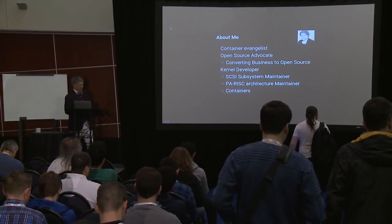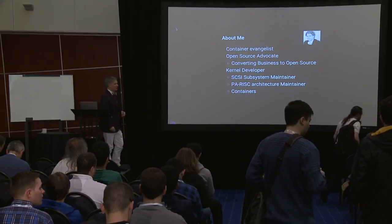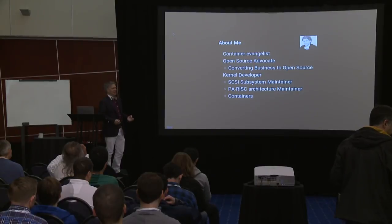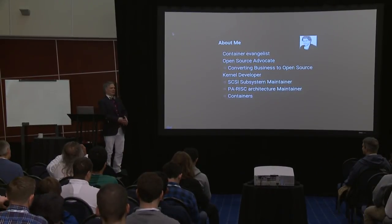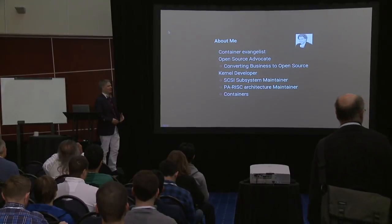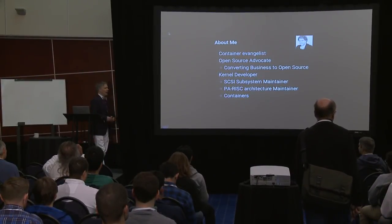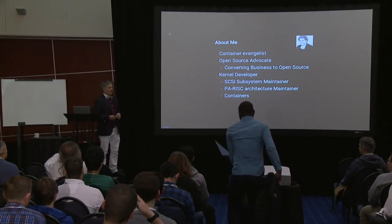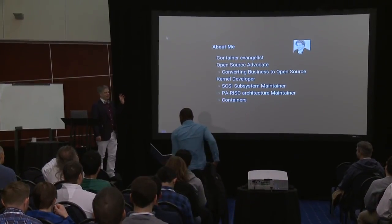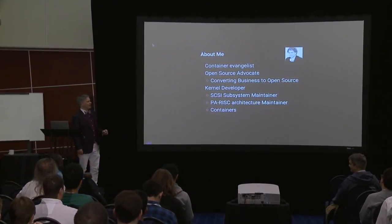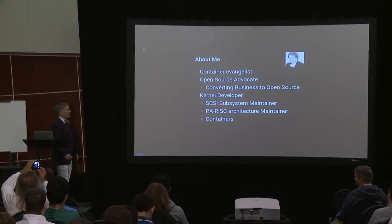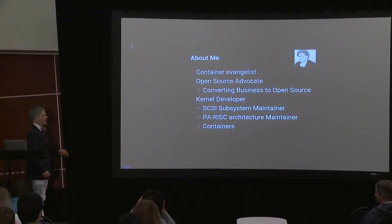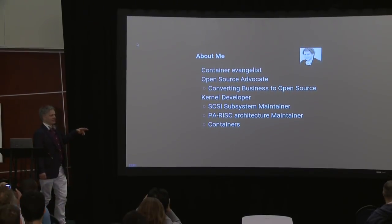My name is James Bottomley. I am currently a container evangelist for IBM. Originally when I worked for Parallels — which is how I got into containers — I was more an open source advocate about converting business to open source, so I was more a business person than a technology person. For a long time I've actually been a kernel developer. I'm still SCSI subsystem maintainer, PA-RISC architecture maintainer. Those two are pretty much nominal titles — Helge Deller does all the work in PA-RISC, and Martin does all the work in SCSI subsystem, but because I send the pull request to Linus, I take all the credit.